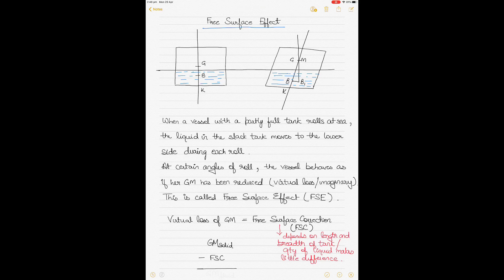To understand what free surface effect is, let's look at two figures. In figure one you see a box-shaped vessel upright, where the force of gravity acts downwards and the force of buoyancy acts upwards. These two forces are equal and opposite and cancel each other out — an upright vessel on even keel, where K is the keel, G is the center of gravity, and B is the center of buoyancy. In figure two the vessel has heeled on one side with no shift in the weights involved.